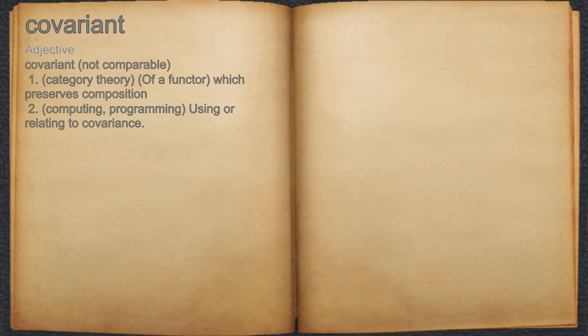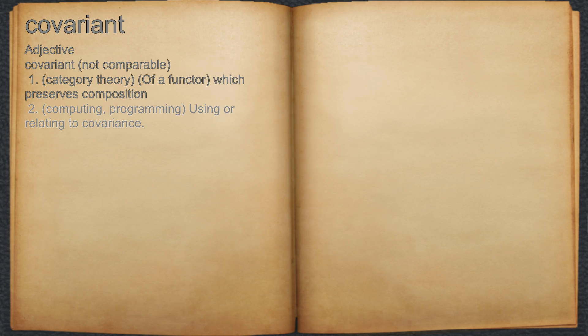Covariant. Adjective. 1. Category theory: of a functor, which preserves composition. 2. Computing, programming: using or relating to covariance.